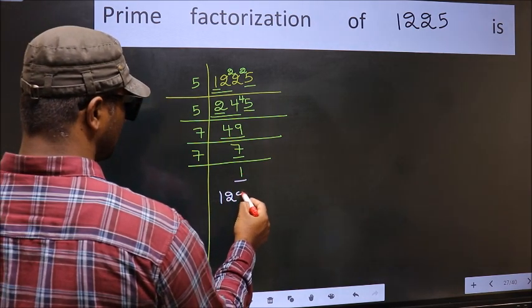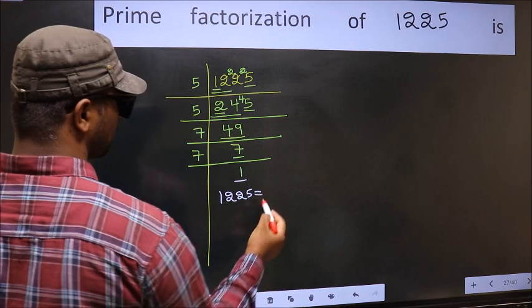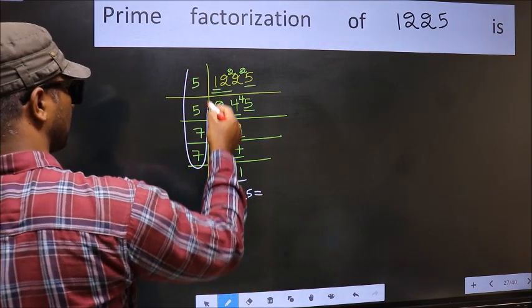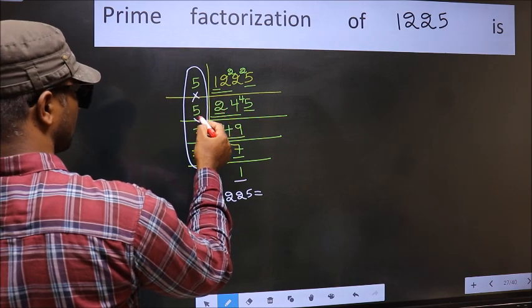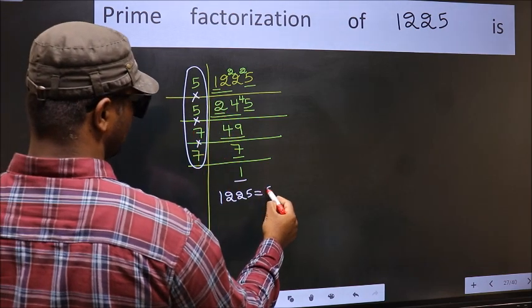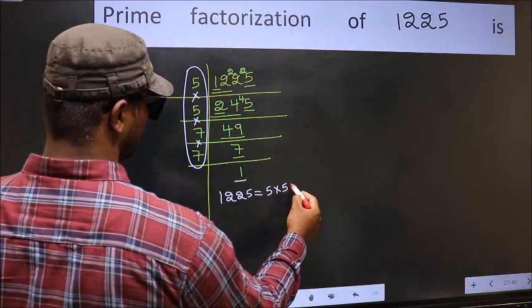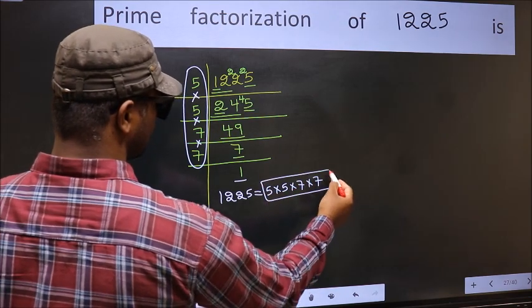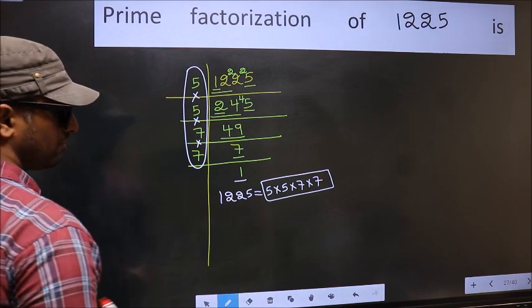So the prime factorization of 1225 is the product of these numbers. That is 5 into 5 into 7 into 7. This is the prime factorization of 1225.